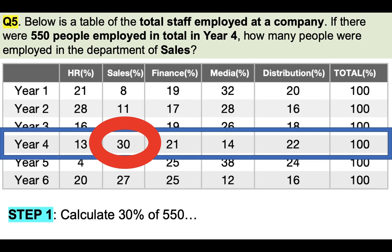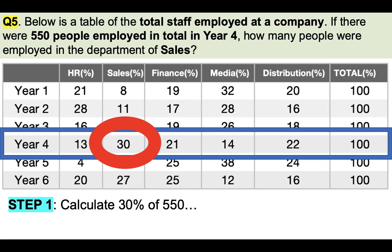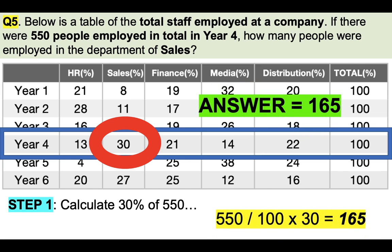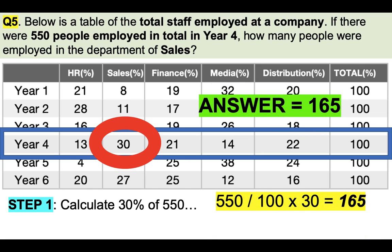So to calculate this answer, we follow step one: calculate 30% of the total 550. To do that: 550 divided by 100 multiplied by 30, and we get the answer 165. So a relatively basic process to follow to get to the answer.